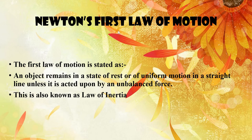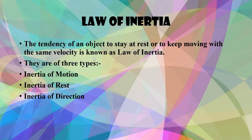If an object is moving in a straight line, it will continue to move in a straight line with the same velocity. Acceleration will not occur unless an unbalanced force acts on it. If the body has a tendency to remain in its state of rest or in motion, we call it the law of inertia.